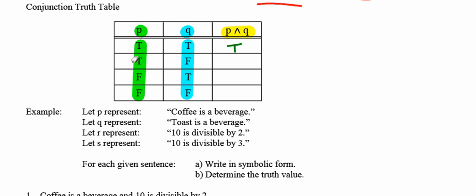In the second line, P is true but Q is false. In order for the conjunction to be true, both statements have to be true. So when one is false, the conjunction is automatically false. In the third line, P is false but Q is true. Again, the conjunction is false because not both statements are true.